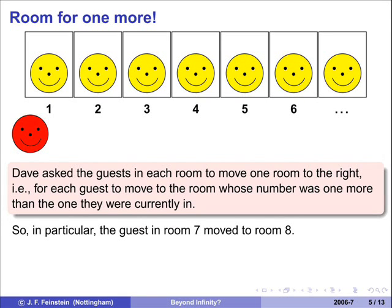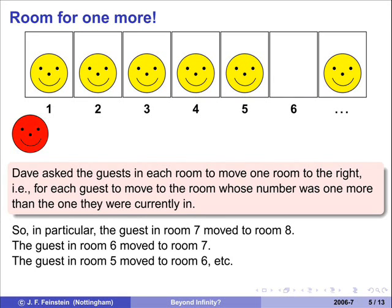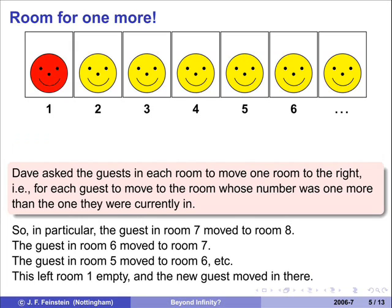But each person moves one room to the right. So the person in room seven will move to room eight, and room six will move to room seven. Let's see where they're going. So the person in room seven has gone off screen to the right. Room six moves to room seven, and so on. That leaves room for one more. Now, you may say that's cheating. What happened to the person in room infinity? There isn't a room infinity. There's only one room for every finite number, and that means there's always one room further to the right. And that room is empty because that person moved one room to the right. So no problem.